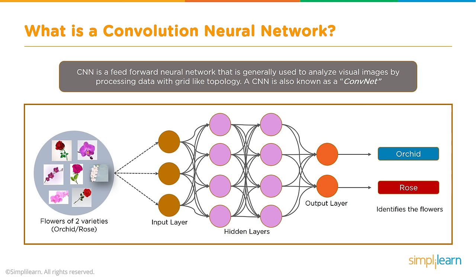A CNN is also known as a ConvNet. It is very central to processing images, and you'll see the different layers as we dig in. Since we're using TensorFlow and Keras in our code later on, you'll see that some of those layers appear in many other neural network frameworks. In this example we see flowers of two varieties — orchid and rose. The image goes into the input layer, data is sent to the different nodes in the next hidden layer based on weights, then out to the output layer where one node says 'it's an orchid' and another says 'it's a rose.'